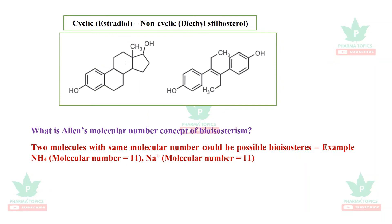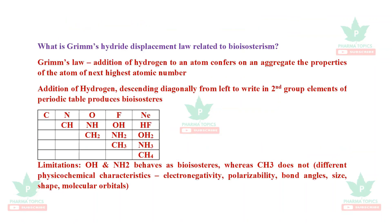Alan's molecular number concept of bioisosteres: scientist Alan found that two molecules with the same molecular number could be possible bioisosteres. For example, NH4⁺ has a molecular number of 11 and sodium also has a molecular number of 11, so NH4⁺ could be a bioisostere for sodium.